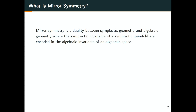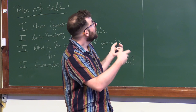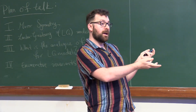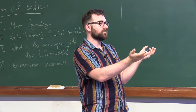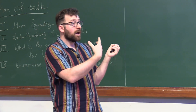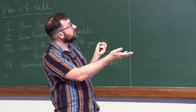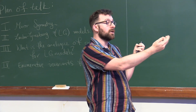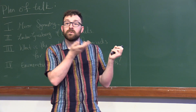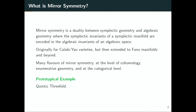So first off, what is mirror symmetry? Mirror symmetry is a way to link symplectic geometry or enumerative geometry with algebraic geometry. Originally it came from a duality in string theory, which had two different models of string theory, 2a and 2b, and their superconformal theories were equivalent but with different inputs. So what you got was an exchange where the symplectic invariants of a symplectic manifold are encoded in an algebraic invariance of another space, which we now call the mirror. Originally this was established for Calabi-Yau threefolds because you have six extra dimensions in string theory, but it was later generalized to Calabi-Yau varieties and further to Fano manifolds and beyond, as you'll see in Landau-Ginzburg world.